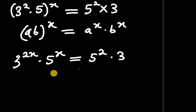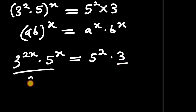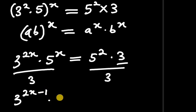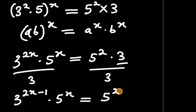Next, we divide everything by 3. Using the exponent subtraction rule — a^b divided by a^c equals a^(b−c) — this gives us 3 to the power of 2x minus 1, times 5 to the power of x, equals 5 to the power of 2.